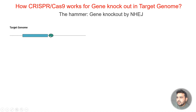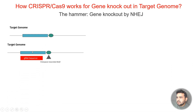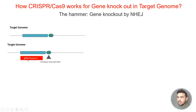We need to find and design one guide RNA sequence which is complementary to that target sequence. Here, the target sequence is shown in one color and the guide RNA sequence is shown in red. Whenever we need to knock out any sequence, we need to design one specific guide RNA sequence which is complementary to that target sequence.